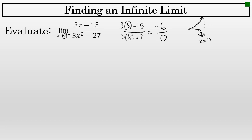Knowing that that is the case, what I can do is let x equal a number that's very close to 3, but just barely to the left of it. Like 2.99 — 2.99 is a hundredth smaller than x equals 3 from the left.